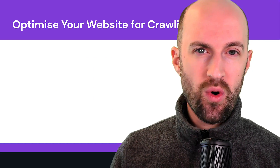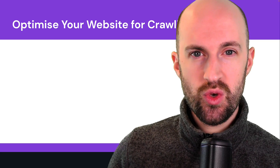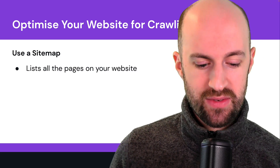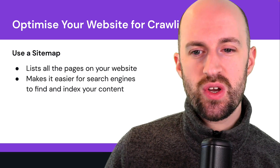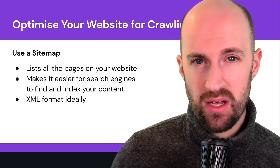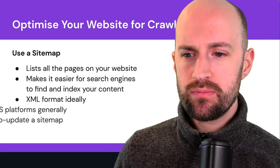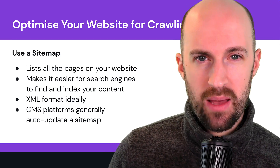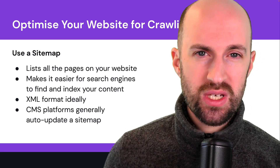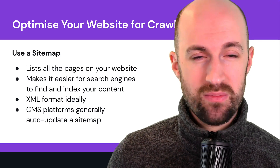How do you optimize your website for crawling so that web spiders can discover your pages and check for new content? First, use a sitemap — it lists all the pages on your website and makes it easier for search engines to find and index your content. It should generally be in XML format, though an HTML sitemap can also exist for users. If you have a CMS, it generally has sitemap capability and auto-updates whenever you add, remove, or update pages. If you're using a custom-coded website, make sure your sitemap is always up to date.